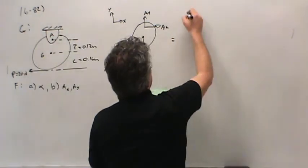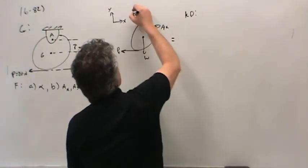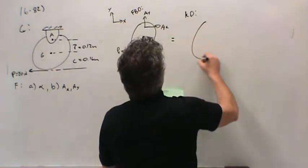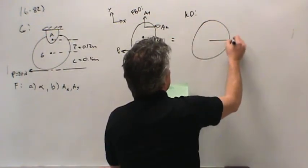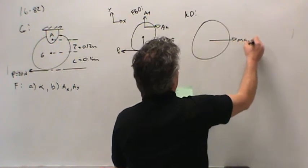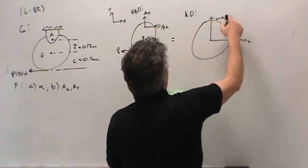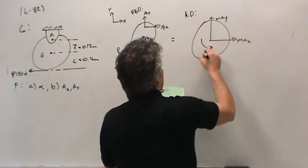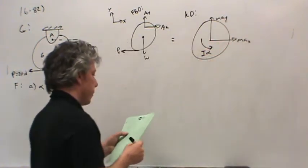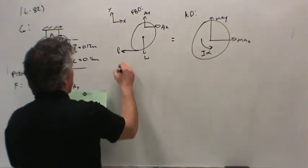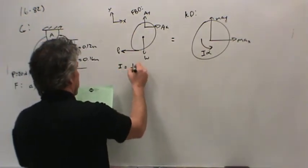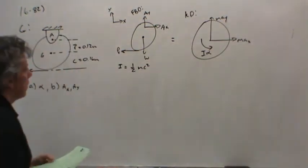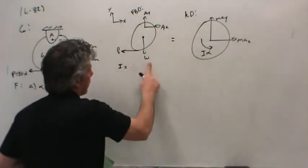That would be equal to the kinetic diagram, which is the wheel with its dynamic results: M ax, M ay, and I alpha. Now, the moment of inertia of this disc is one-half mc squared, so we write that as mc squared over 2.